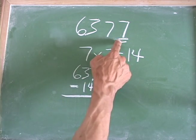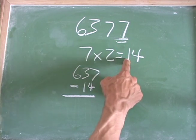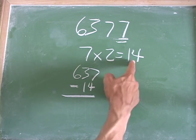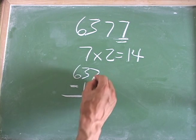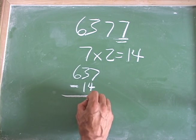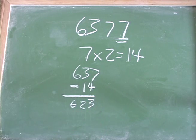So again, we took the last digit of the number 7, multiply it by 2, which gives us 14. Then we take that 14 and we subtract it from the remaining 3 digits here. So then we go 7 minus 4 is 3, 3 minus 1 is 2, and 6 minus 0 is going to be 6. So we have 623.